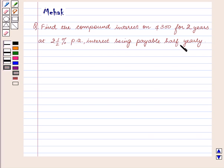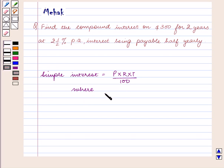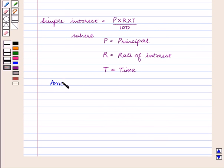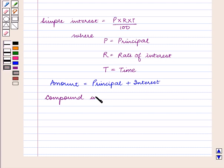Interest being payable half yearly. We know that simple interest is equal to P into R into T upon 100, where P is equal to the principal, R is equal to the rate of interest, and T is equal to time. Amount is equal to principal plus interest, and compound interest is equal to amount minus original principal.